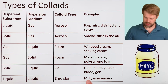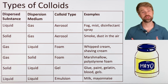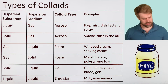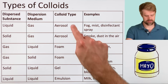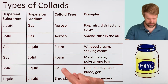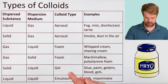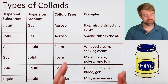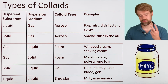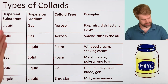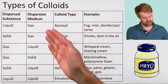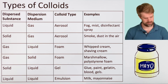We'll complete our chart by adding emulsions — liquid dispersed in liquid. Milk is another good example of an emulsion. We can see general categories like aerosols, foams, gels, and emulsions. Notice that every one has the two phases we discussed: the dispersed substance in a dispersion medium.